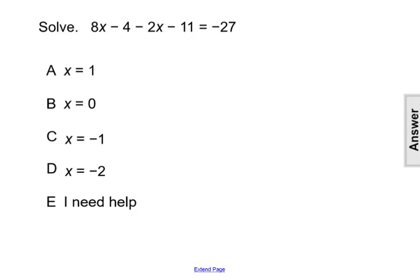Now in this equation, the first thing you should notice is that your variable is actually in two different terms. You have 8x and negative 2x. So we want to combine those like terms so we only see the variable in one spot. We also can combine the like terms of minus 4 and minus 11.